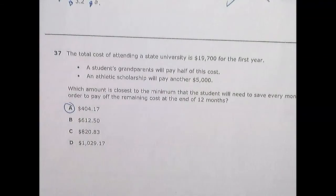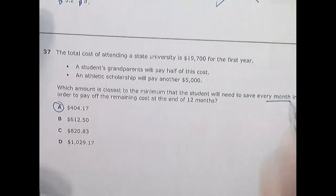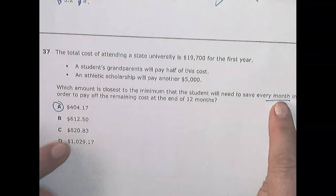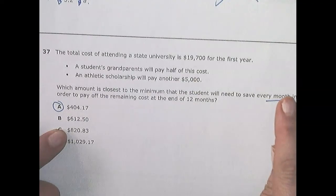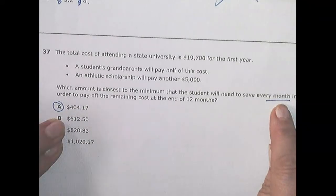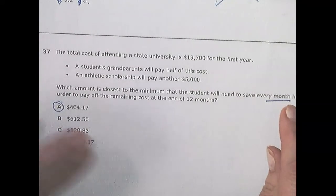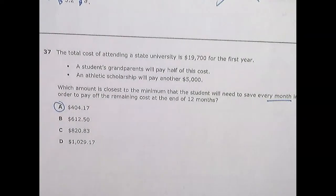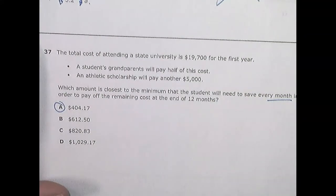Question 37. The cost of attending your college is $19,700 and that's for first year. Your parents, grandparents are going to pay for half and you get a scholarship for $5,000. Which amount is closest to the minimum a student will need to save every month in order to pay for the remaining cost of the 12 months? Now, before we get crazy with numbers, let's go with logic. It says every month. Do you think you can save $1,000 every month for 12 months? I don't think so. And do you think you're going to save $800 and go to school? I don't think so. So I'm pretty sure these two are wrong. And I hope it's A because that's the smaller number. These two are not going to work. Not for a kid that's in high school.